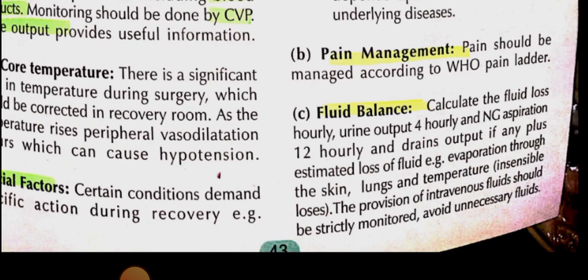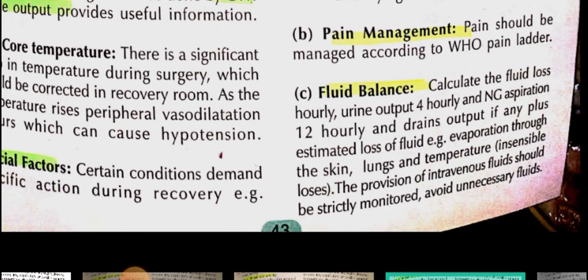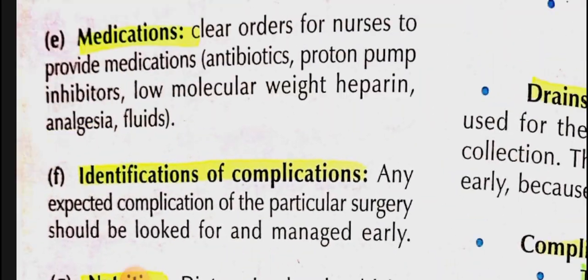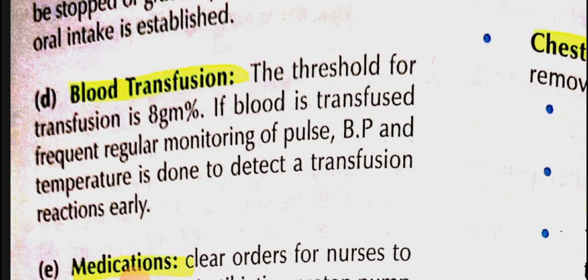For fluid balance in the ward: check the patient's fluid losses, record urine output 4-hourly, NG aspiration 12-hourly, and monitor drain output. Replace ongoing losses with IV fluids and monitor continuously. If blood transfusion is needed, administer it when hemoglobin is less than 8. During transfusion, regularly monitor pulse, BP, and temperature to detect transfusion reactions, as studied in the blood transfusion chapter.